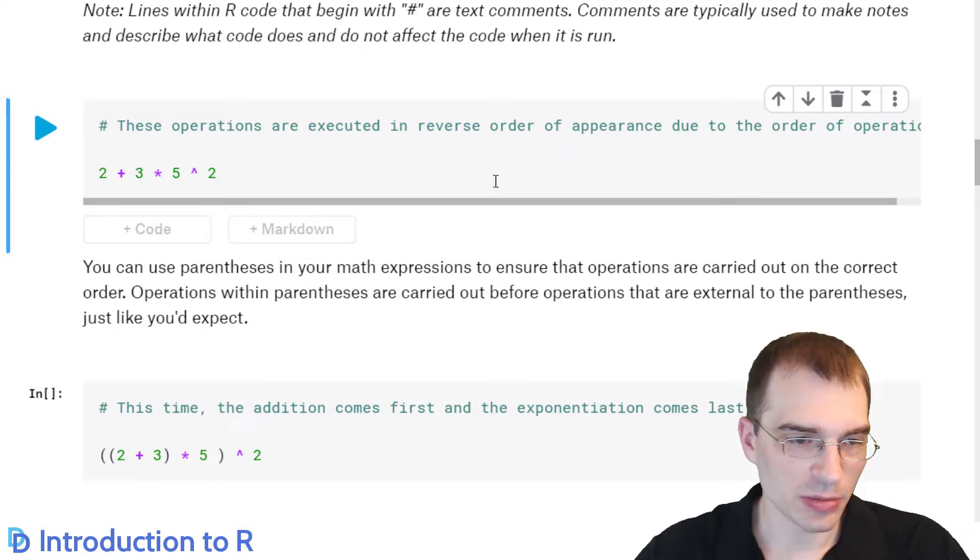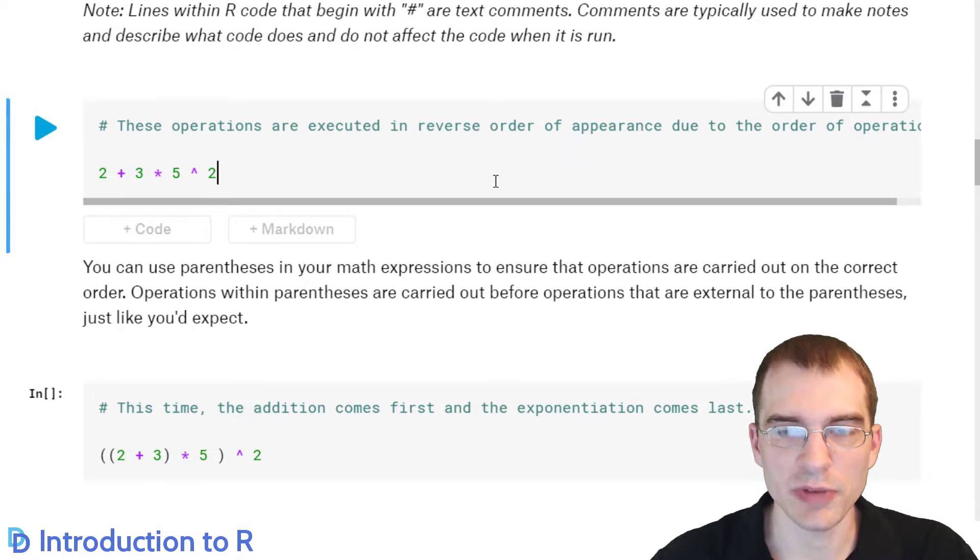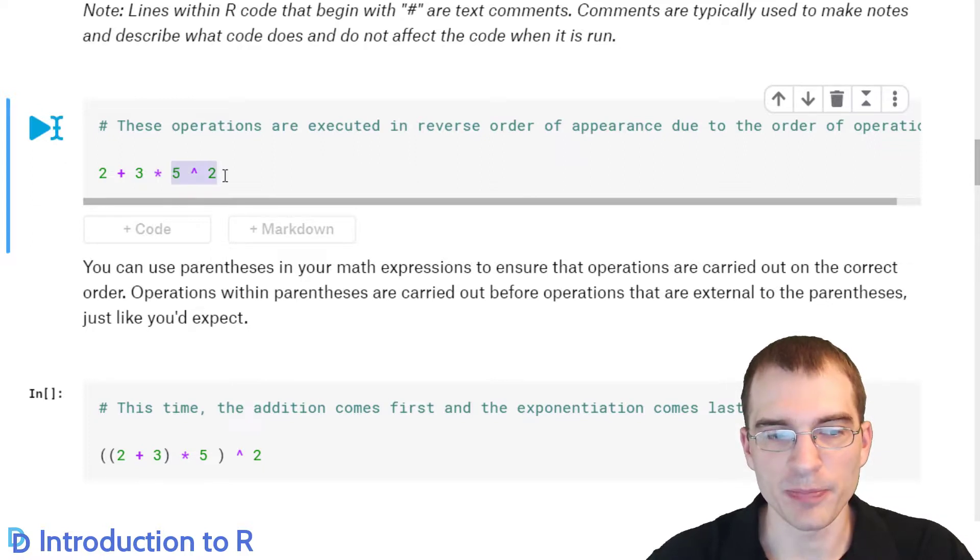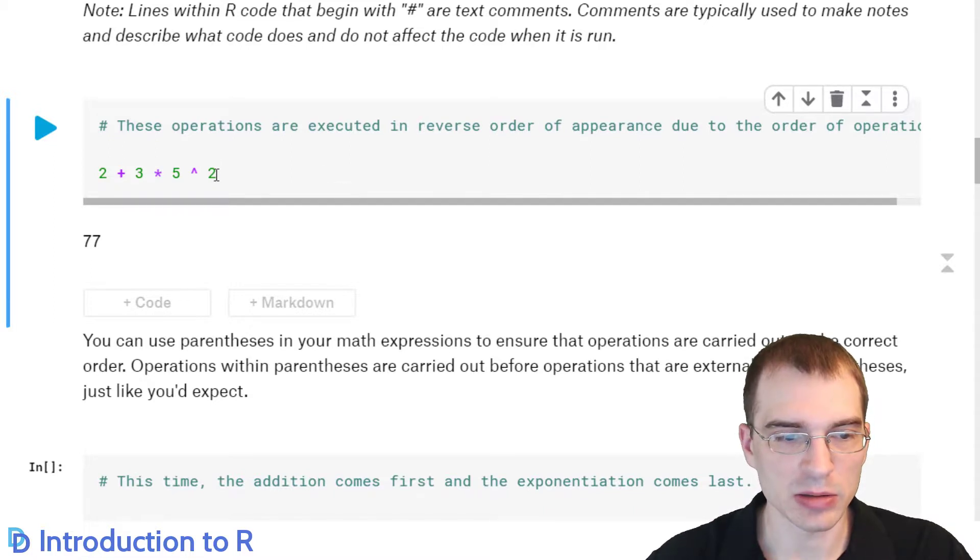Addition, multiplication, and exponentiation follow a specific order of operations. Addition and subtraction are performed last, multiplications are performed before that, and exponentiation is performed first. So if we run this, it's actually going to perform the exponentiation first. So 5 to the 2 will happen, then the multiplication, and then the addition. So the output is 77. 5 to the 2 is 25, 25 times 3 is 75, plus 2 is 77. So that is correct based on the order of operations.